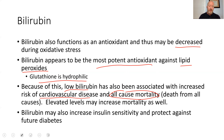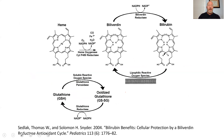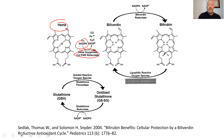Bilirubin may also increase insulin sensitivity and protect against future diabetes. Here you have heme, and here's that heme oxygenase requiring reducing agents turning it into biliverdin. Biliverdin via biliverdin reductase, and again more reducing agents, turns into bilirubin.